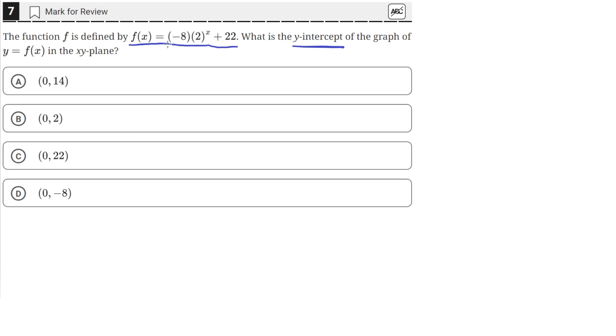So we have this function, and we need to find the y-intercept. We know that the y-intercept occurs when x is equal to 0. So we just need to find the value of y when x is equal to 0, where y equals f(x).